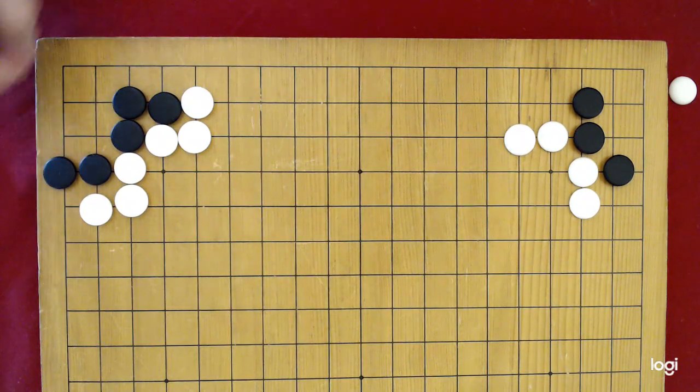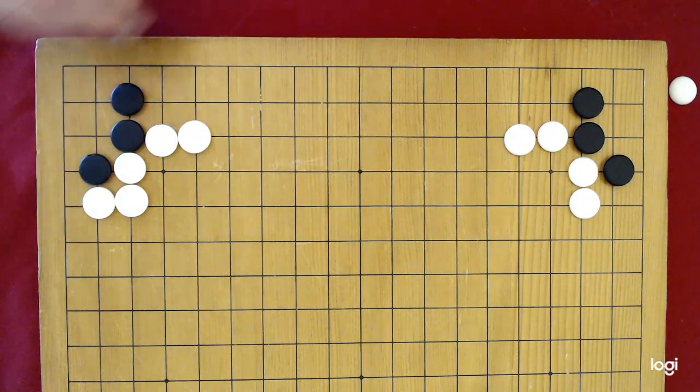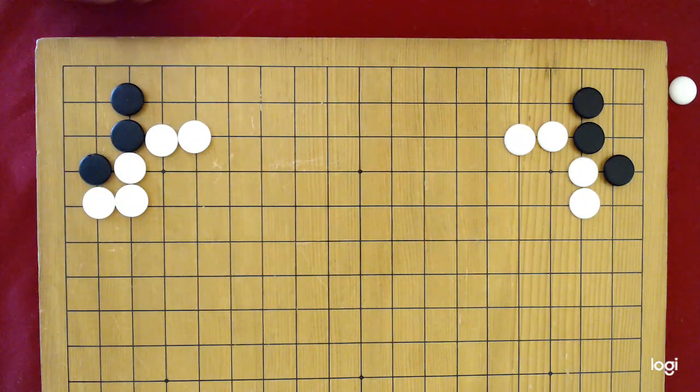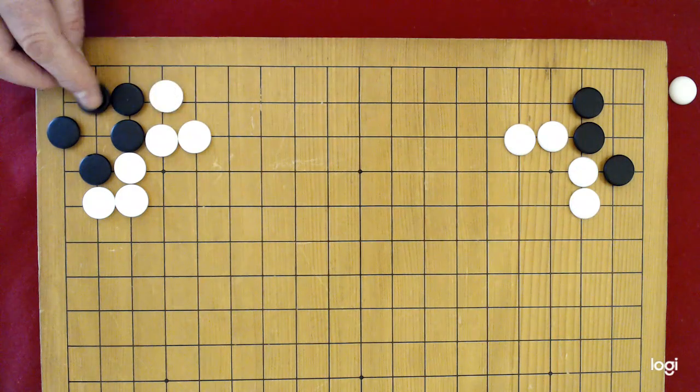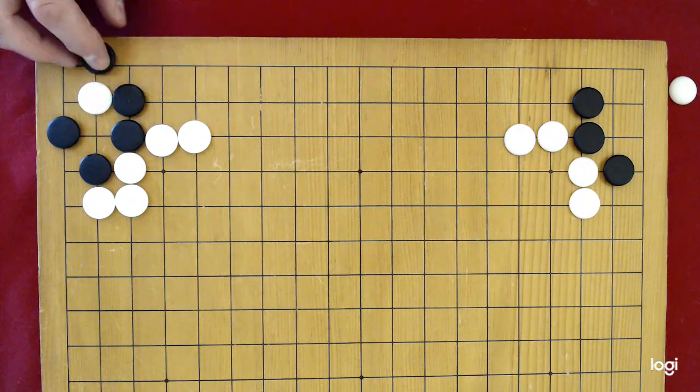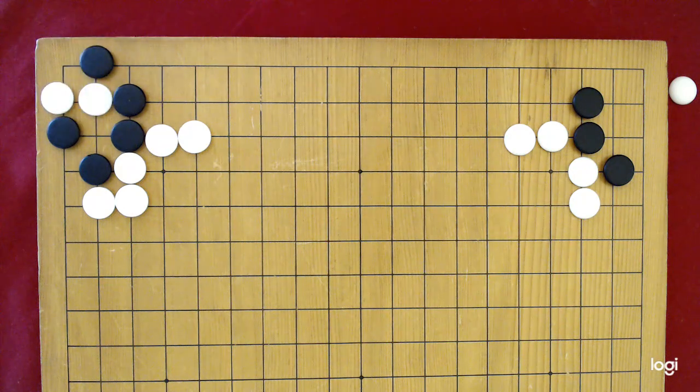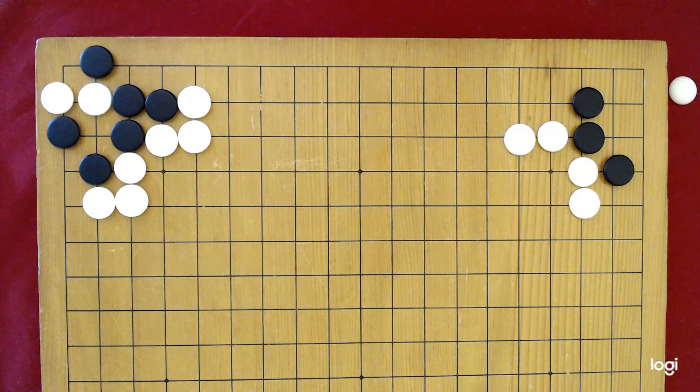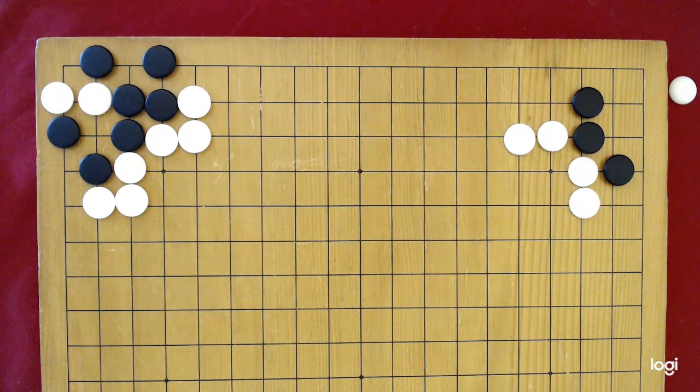So once again, we'll get into a position like this and white plays here. Black needs to play here. If white here, black plays there. If white here, black plays here first, play there and make two eyes. White plays the two vital points of the zigzag four. Black extends out one more. White blocks here and black goes down and makes two eyes. So that is the tripod group in the corner.